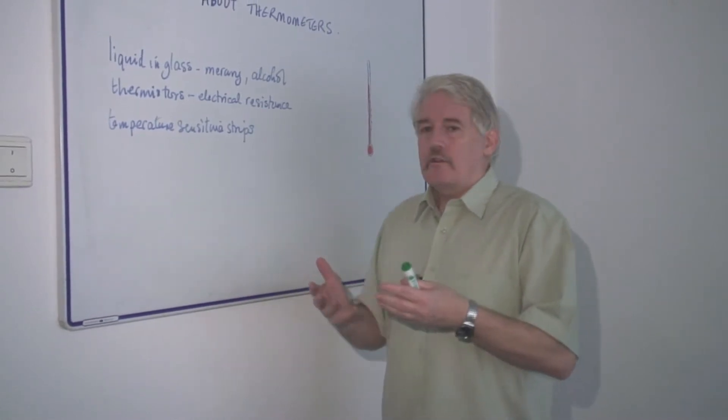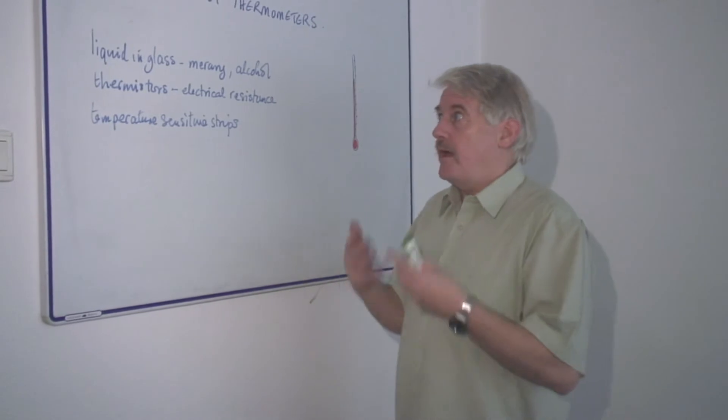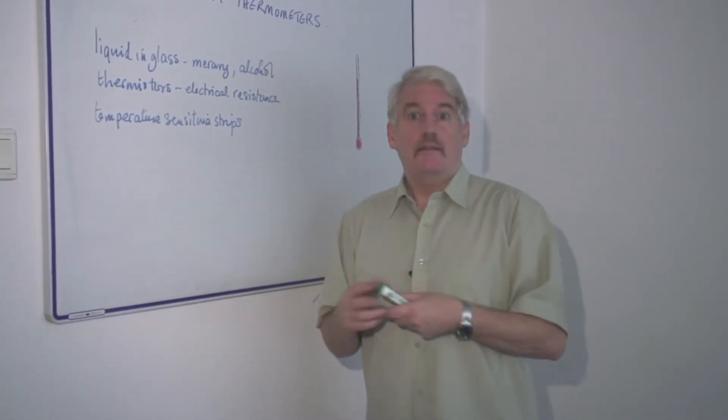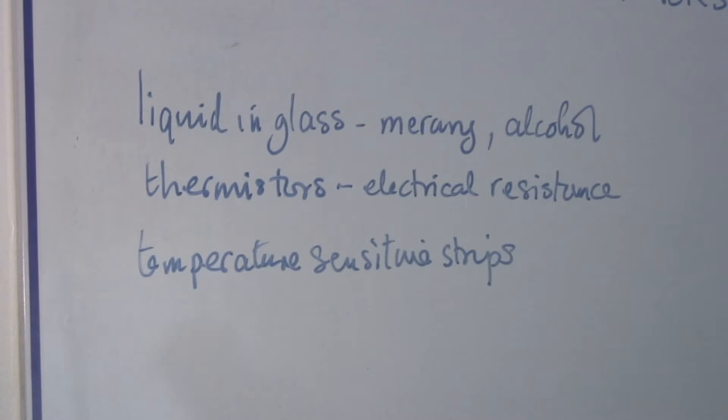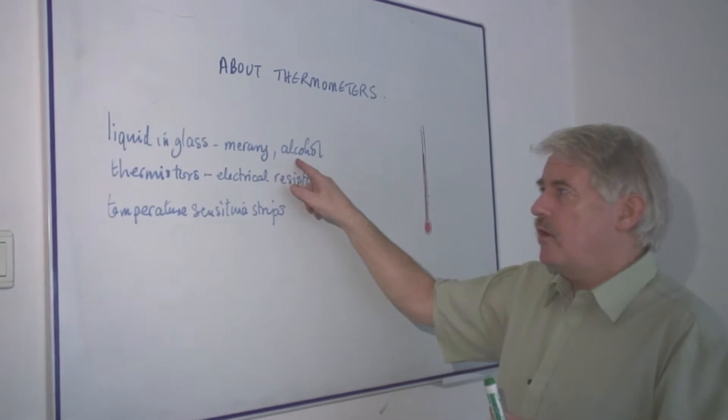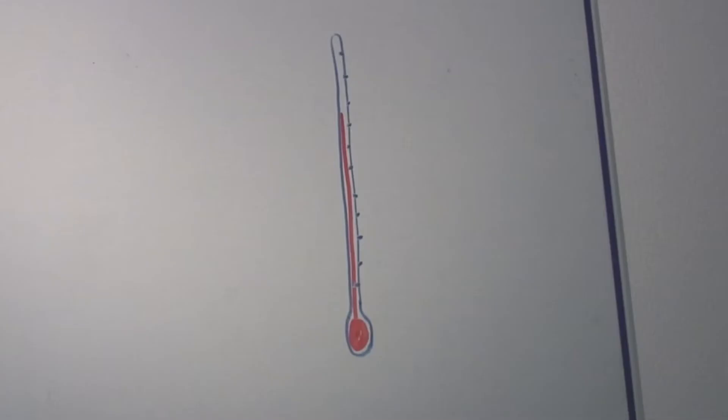Now we know that things expand when temperature changes and therefore liquids expand in the same way. The two liquids used are mercury or alcohol but nowadays more often it's alcohol and these are called liquid in glass thermometers and look something like this.